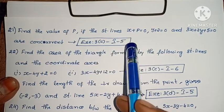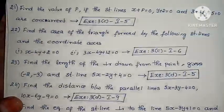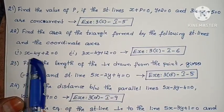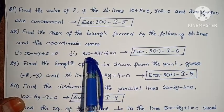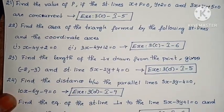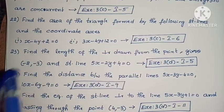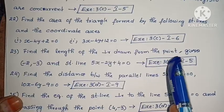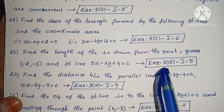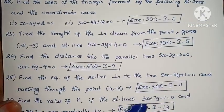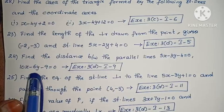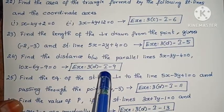This problem has been repeated in many question papers, so it is very important. Next, find the area of the triangle formed by the following straight lines and the coordinate axis: (i) x minus 4y plus 2 equals to 0, (ii) 3x minus 4y plus 2l equals to 0. Next, find the length of the perpendicular drawn from the point (-2, -3) to the straight line 5x minus 2y plus 4 equals to 0. Next, find the distance between the parallel lines 5x minus 3y minus 4 equals to 0 and 10x minus 6y minus 9 equals to 0.